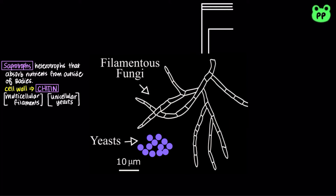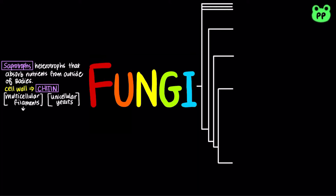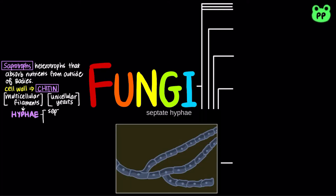Some species grow as either filaments or yeast, while others grow as both. The multicellular filament is known as hyphae, which are classified into two forms. Septate hyphae are divided into individual cells by porous plates known as septa; therefore, septate hyphae are uninucleated.